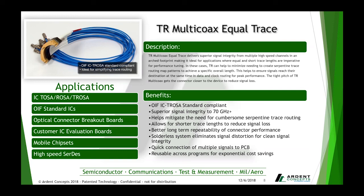TR Equal Trace utilizes a new interface to create a crescent-shaped connector, which can be located much closer to the device under test. The closer proximity yields a shorter, equal-length trace, enhancing the measured performance of any new device which transmits or receives data. The setup is particularly useful when characterizing optical transmitters and receivers, and was designed for the OIF ICTROSA package.